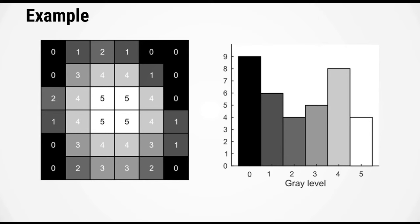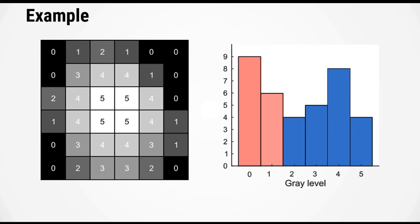The way Otsu's method works is the algorithm will first pick a value for the intensity threshold. Let's say the algorithm has picked the value of 2. In this case, any pixels with a value less than 2 is considered the background and any pixel with a value of 2 or greater is considered the foreground, labeled in red and blue.